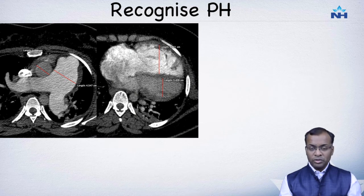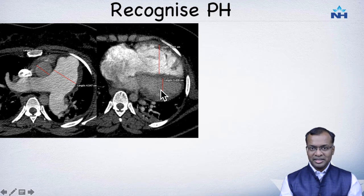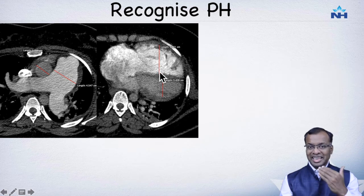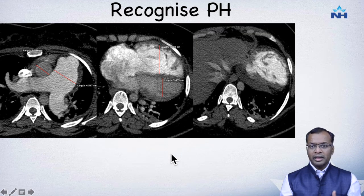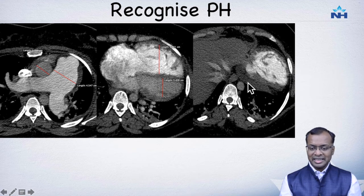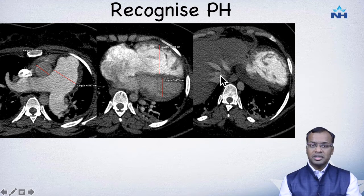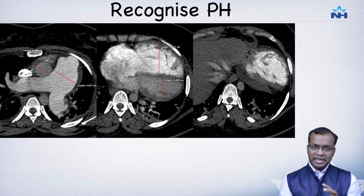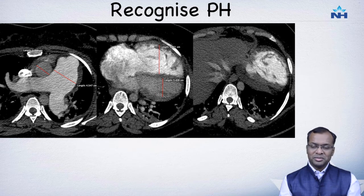Another feature is dilatation of the right ventricle compared to the left ventricle. The right ventricle is normally smaller than the left, but if we see the RV is dilated, that is another feature of pulmonary hypertension. We can also see a pseudo-marker of tricuspid regurgitation on CT: contrast refluxing into the IVC and hepatic veins is a surrogate marker for tricuspid regurgitation, pointing further towards pulmonary hypertension.